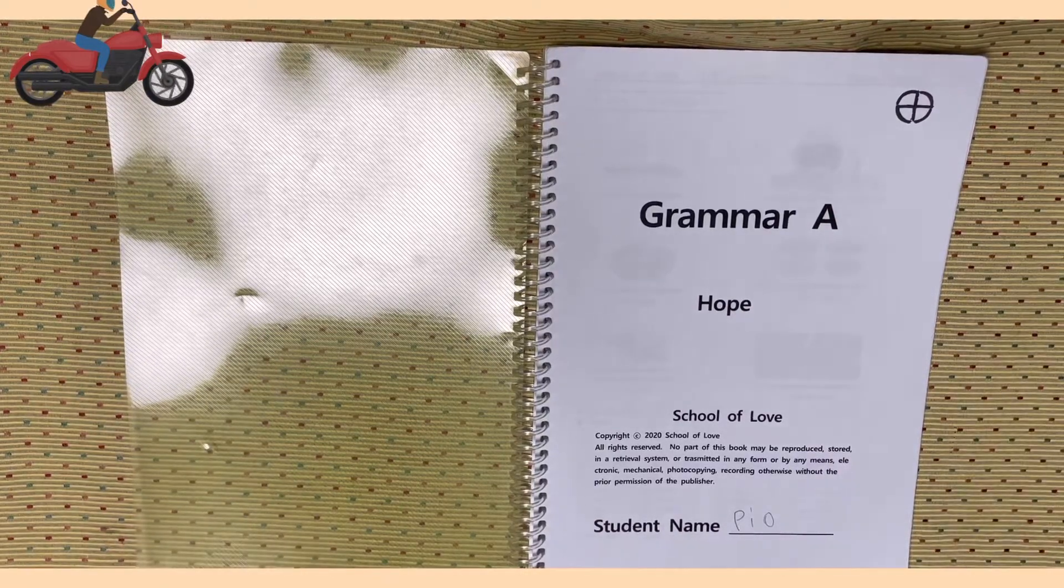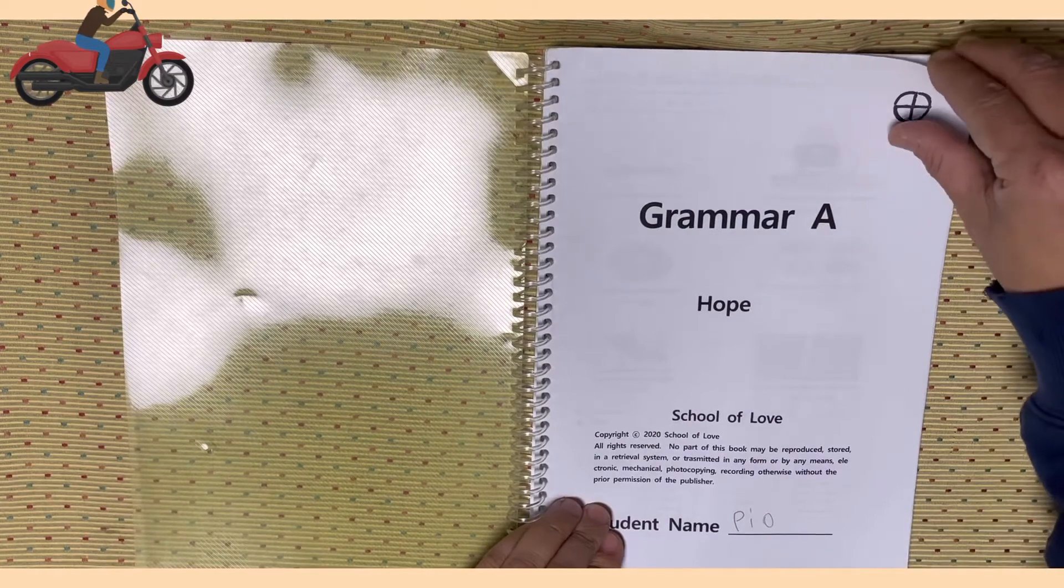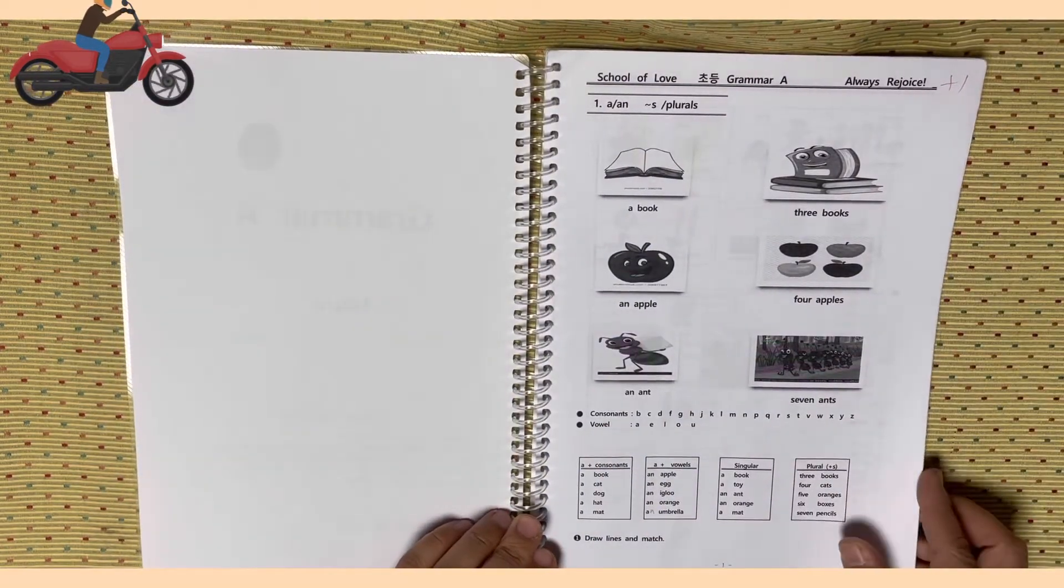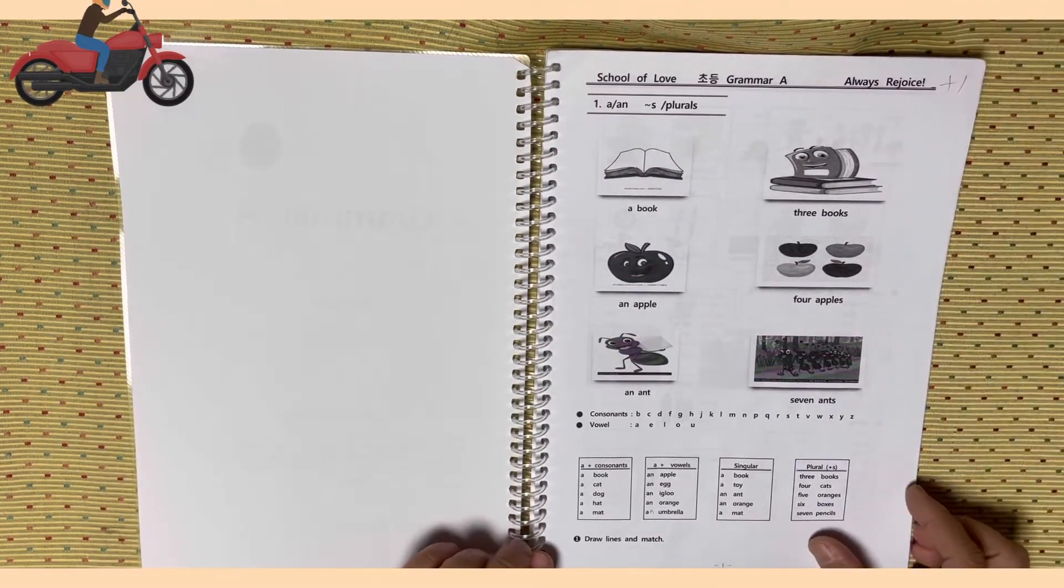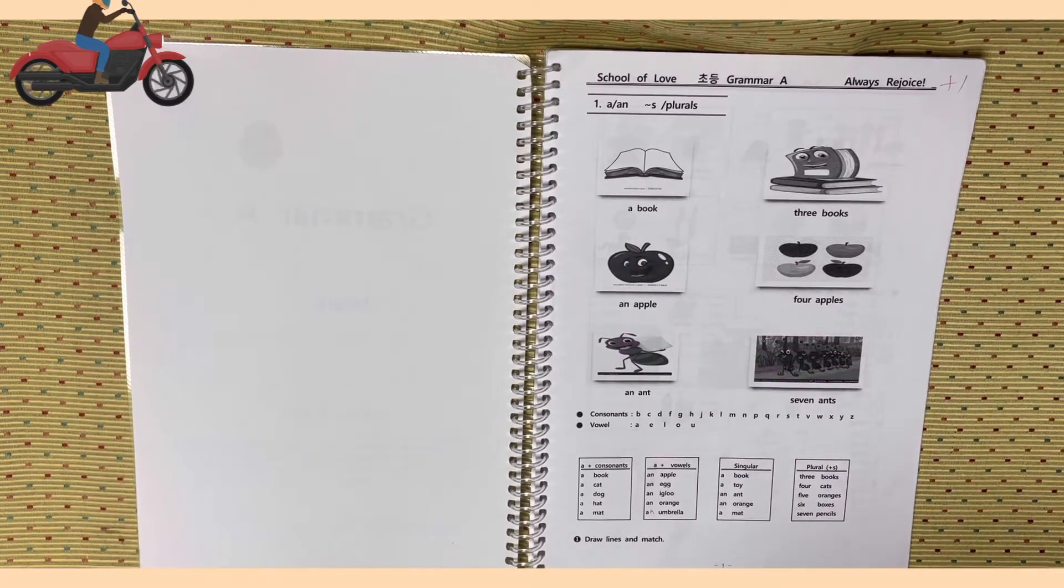Hello everyone, it's Myunko Jan. Today I am going to read grammar A, unit 1, page 1. A book, three books, an apple, four apples, an ant, seven ants.